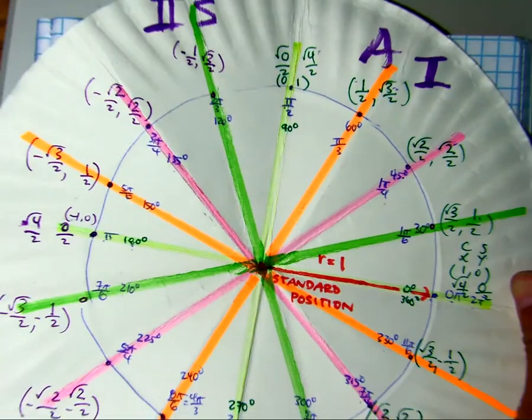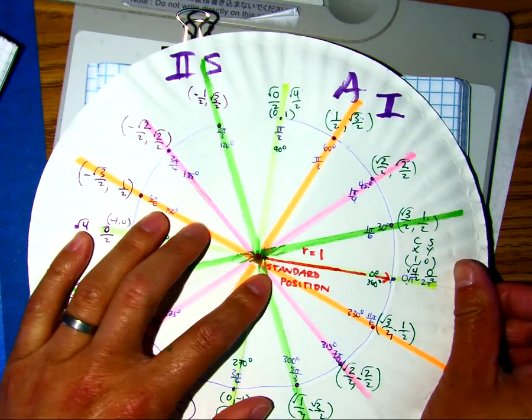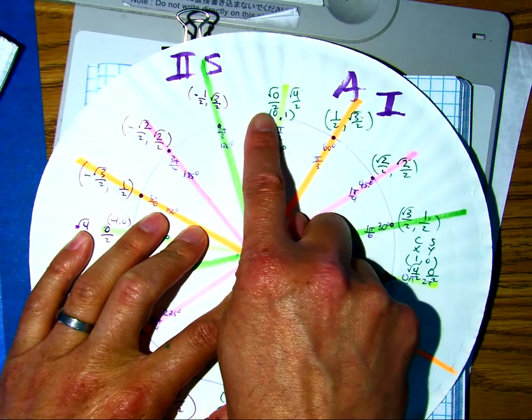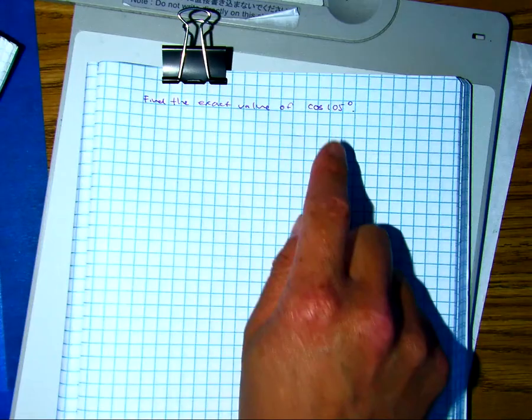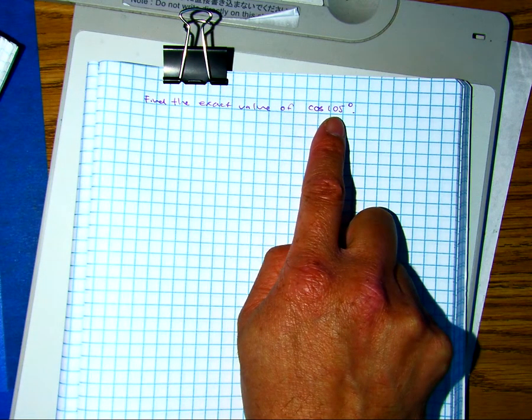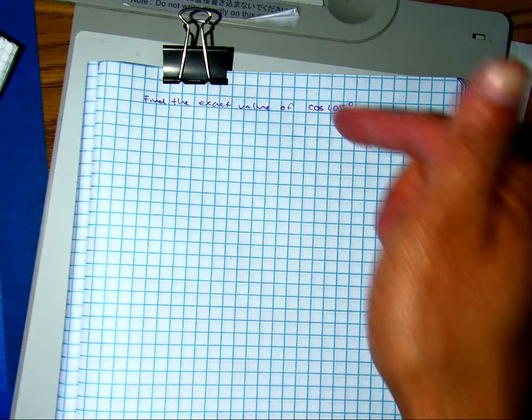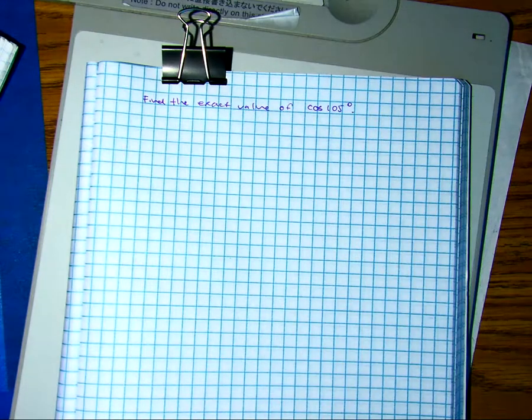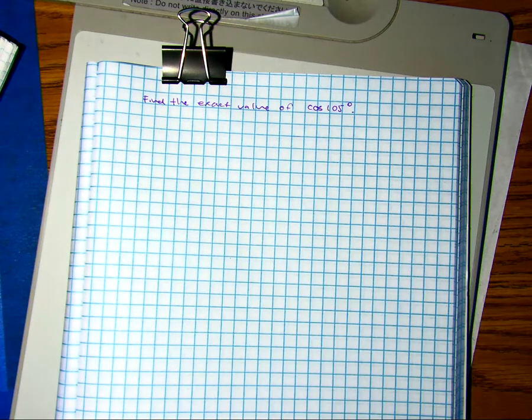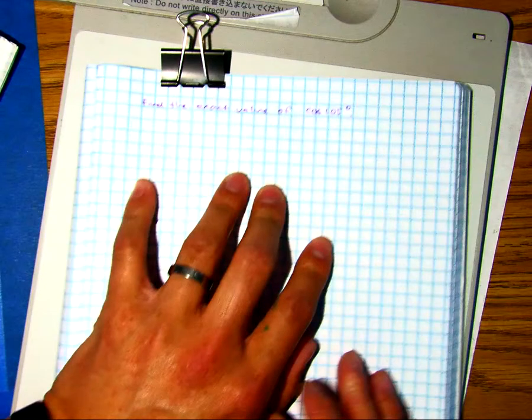So 105 degrees is somewhere in here. Basically, we're going to be using an identity where I can add two angles or subtract two angles to find this value. We're using the unit circle, not the calculator to find an answer. Cosine of 105 degrees.